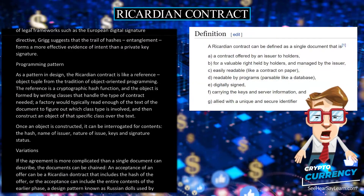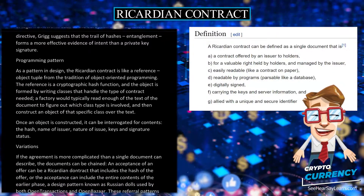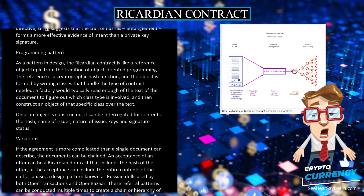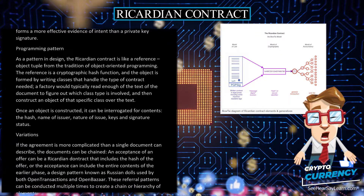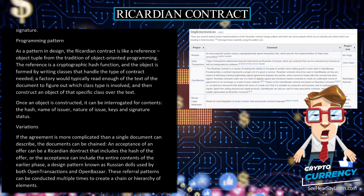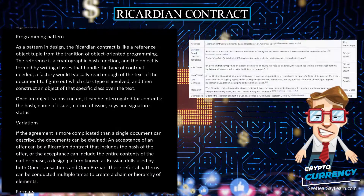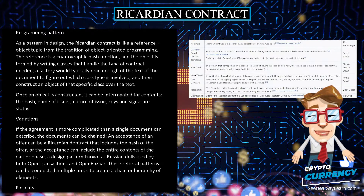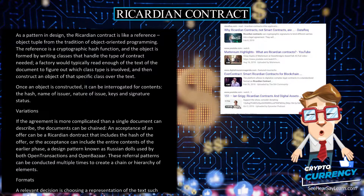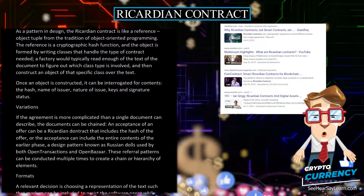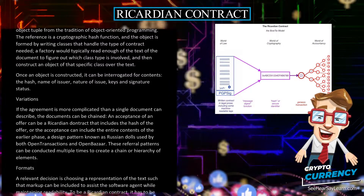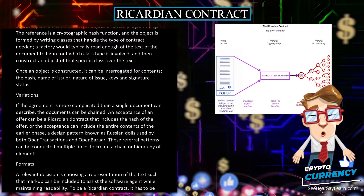If the agreement is more complicated than a single document can describe, the documents can be chained. An acceptance of an offer can be a Ricardian contract that includes the hash of the offer, or the acceptance can include the entire contents of the earlier phase — a design pattern known as Russian Dolls, used by both Open Transactions and OpenBazaar. These referral patterns can be conducted multiple times to create a chain or hierarchy of elements.